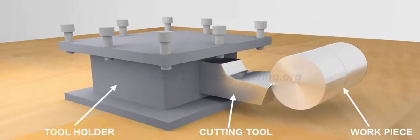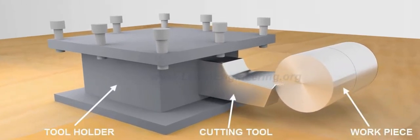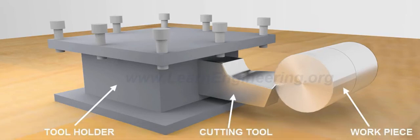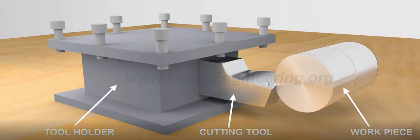In this video we can see a cutting tool and workpiece setup. We are attaching a single point cutting tool with the help of a tool holder in a machine, and that single point cutting tool is cutting a cylindrical workpiece. This is our cylindrical workpiece, and this is our end cutting edge angle and this is our side cutting edge angle.